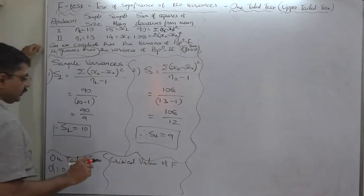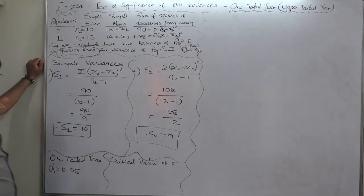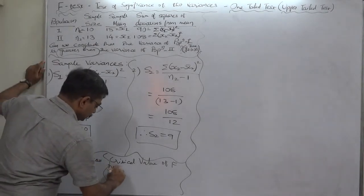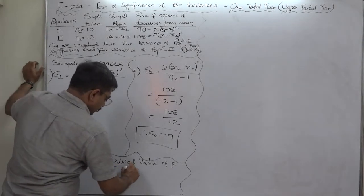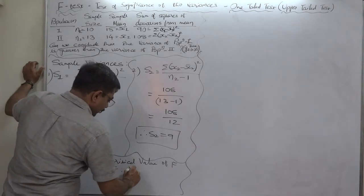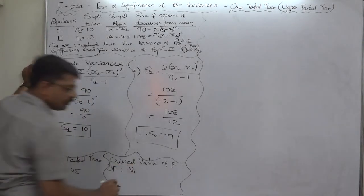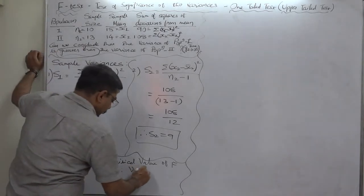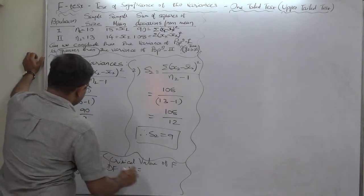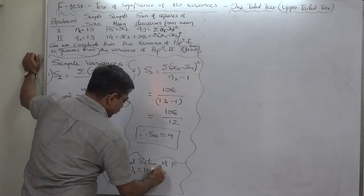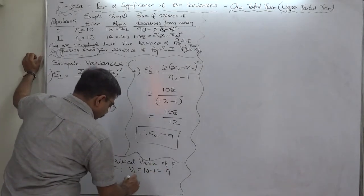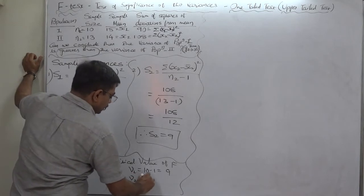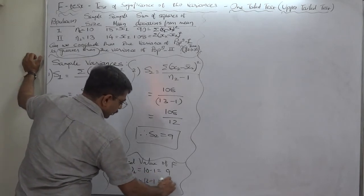Before finding the critical value, we need to consider the degrees of freedom. For the first sample, the degrees of freedom ν1 = 10 − 1 = 9. For the second sample, ν2 = 13 − 1 = 12.